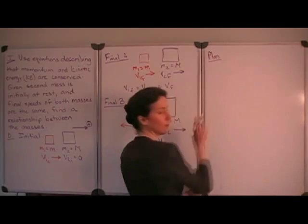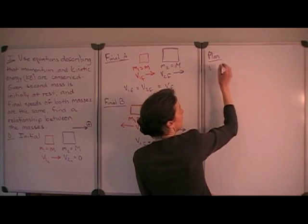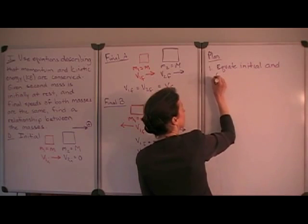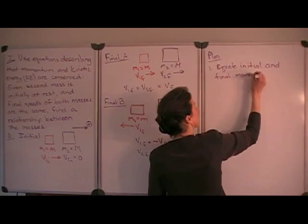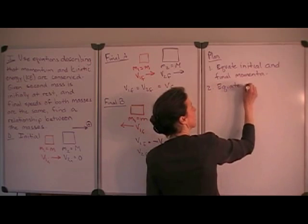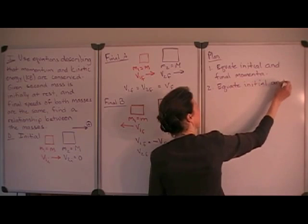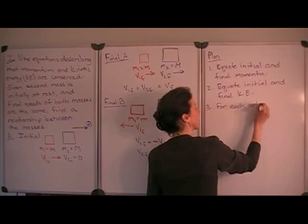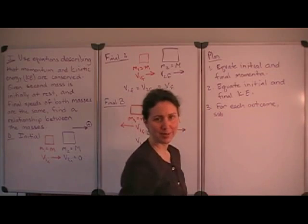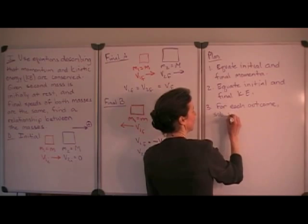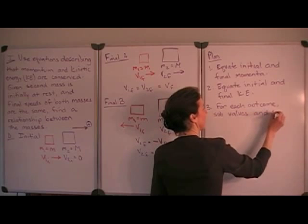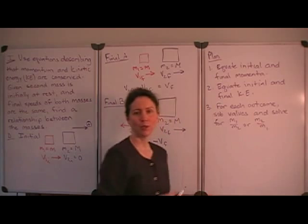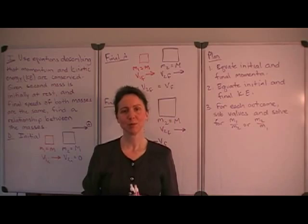So, as we figure out then a plan for evaluating this problem, what we're going to do is, first of all, equate initial and final momenta, and then we're going to equate initial and final kinetic energies. And then, for each outcome, we'll substitute values, or substitute symbols, because that's all we have. And then, solve it for either m1 over m2, or m2 over m1, again, depending on which seems more appropriate at the time. I'm going to summarize what we've done so far, and then we'll move on with evaluating the problem.